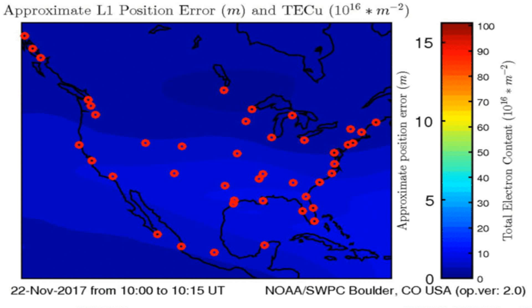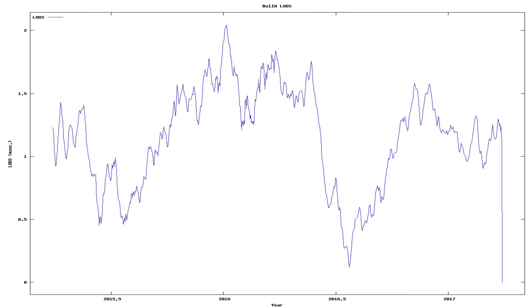And here we see the total electron content above the Earth. Anomalies in total electron content have sometimes preceded earthquakes below that area on Earth.